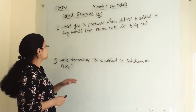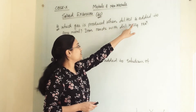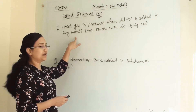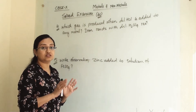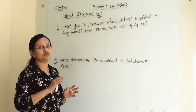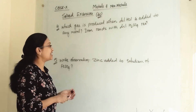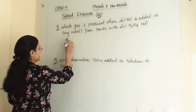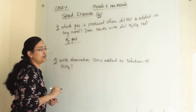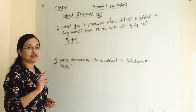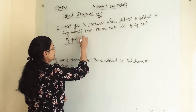The fourth question: which gas is produced when dilute hydrochloric acid is added to any metal? Whenever an acid is mixed with any metal, hydrogen gas (H₂) will evolve. So H₂ gas is produced when any metal reacts with an acid.